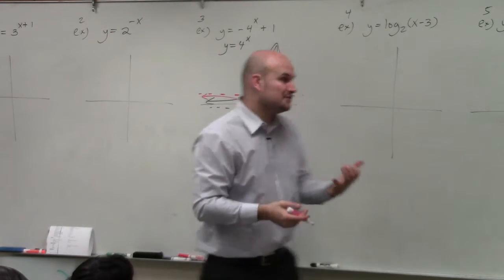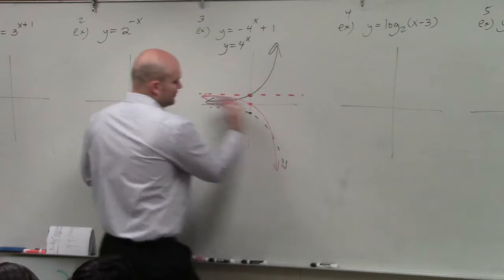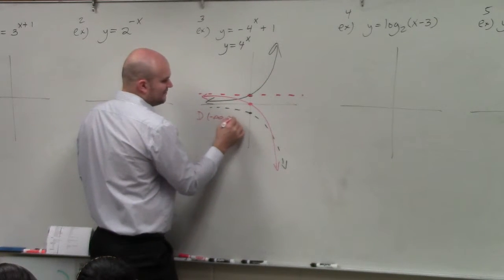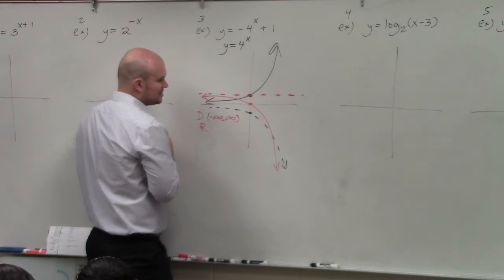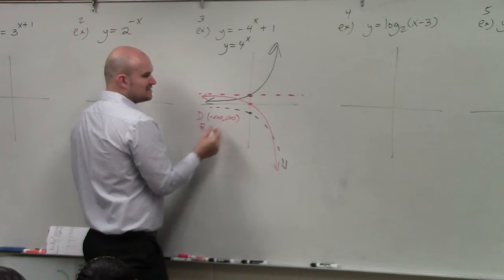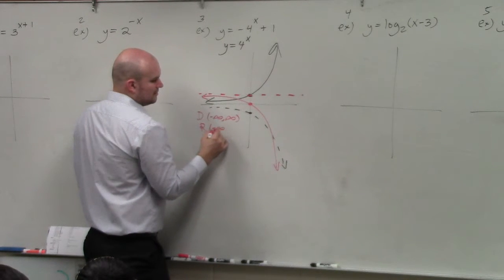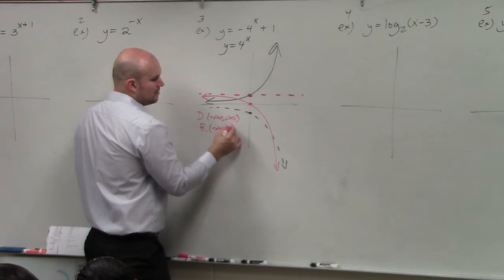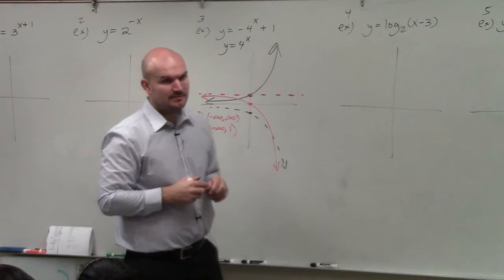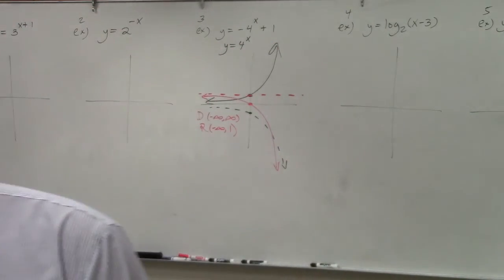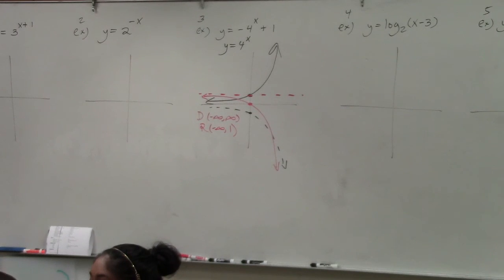Now, the next thing I ask you to do is identify the domain and range. The domain is still expanding left and right. So the domain is from negative infinity to infinity. However, the range is going to be from negative infinity all the way up to positive 1. Make sure when you guys are doing transformations with reflections, make sure you apply kind of the order of operations.